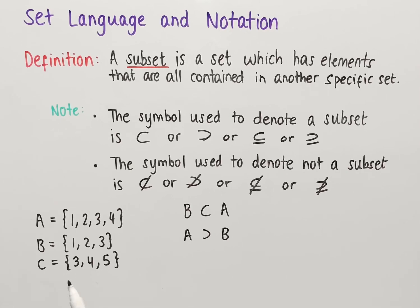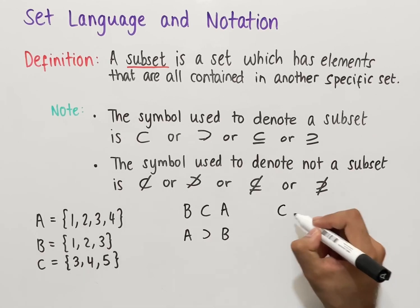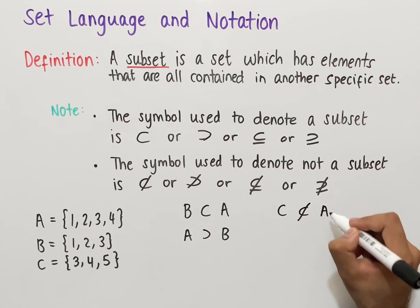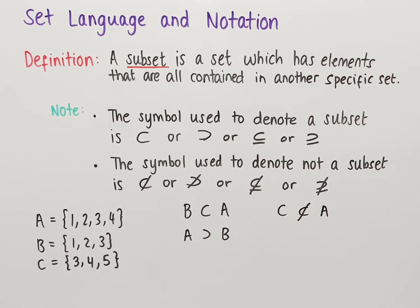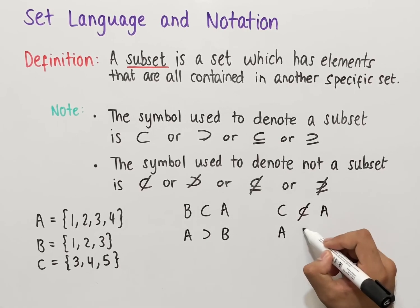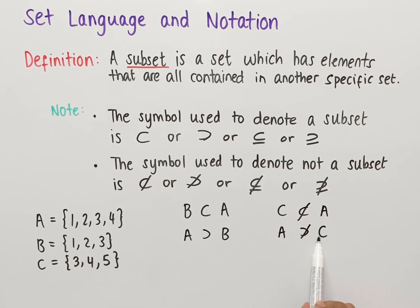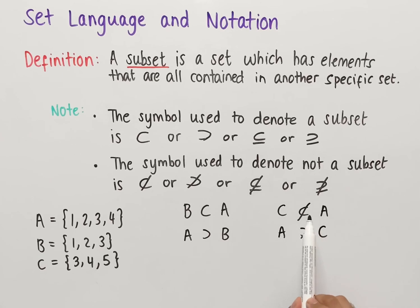Because 5 is in C but not in A, we say that C is not a subset of A. This is written using the 'not a subset' symbol. Similarly, we could write it in another orientation — both are read as 'C is not a subset of A.' Remember, the orientation of the symbol is important.